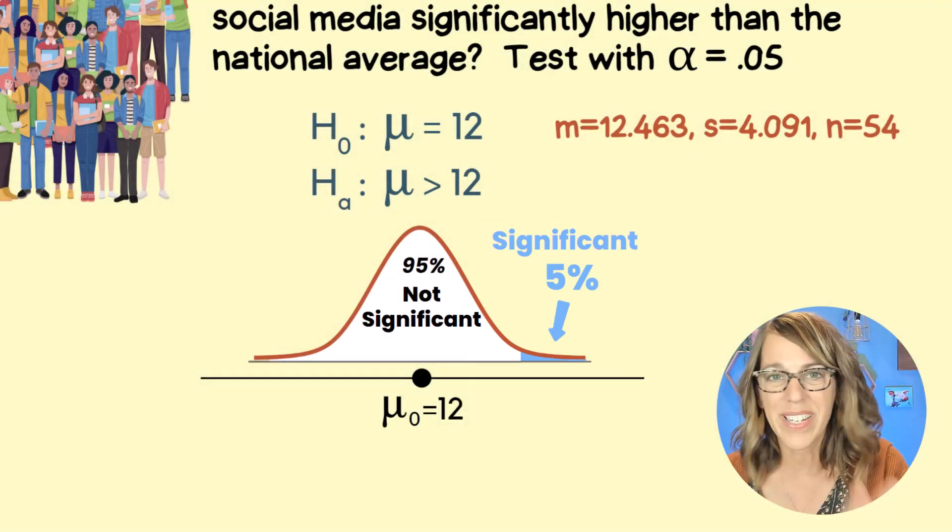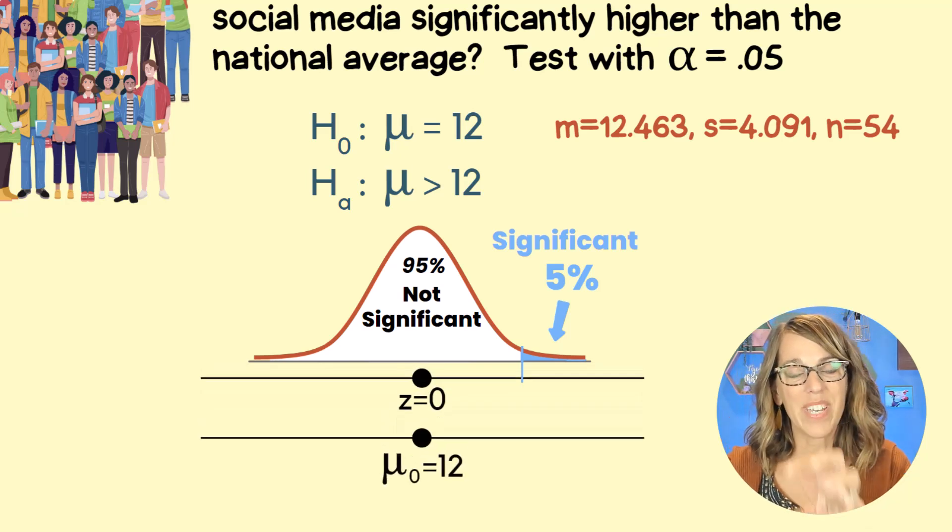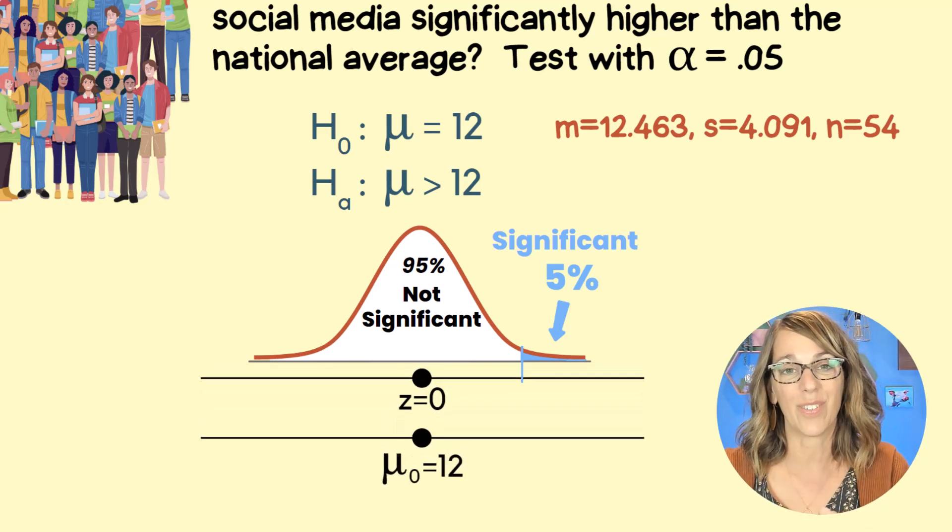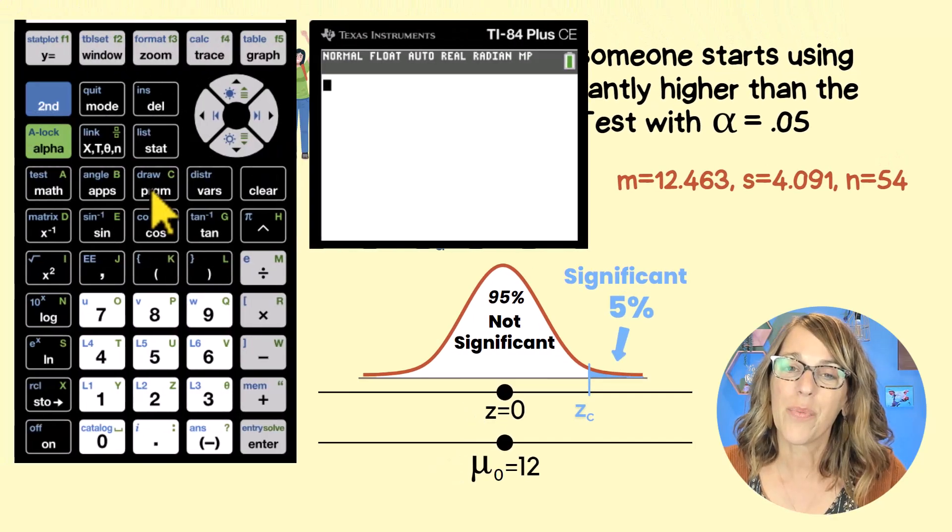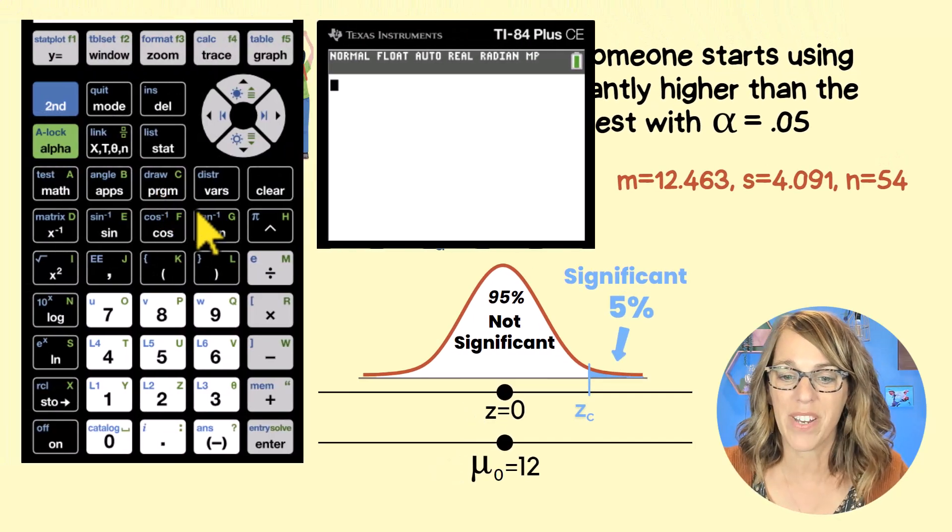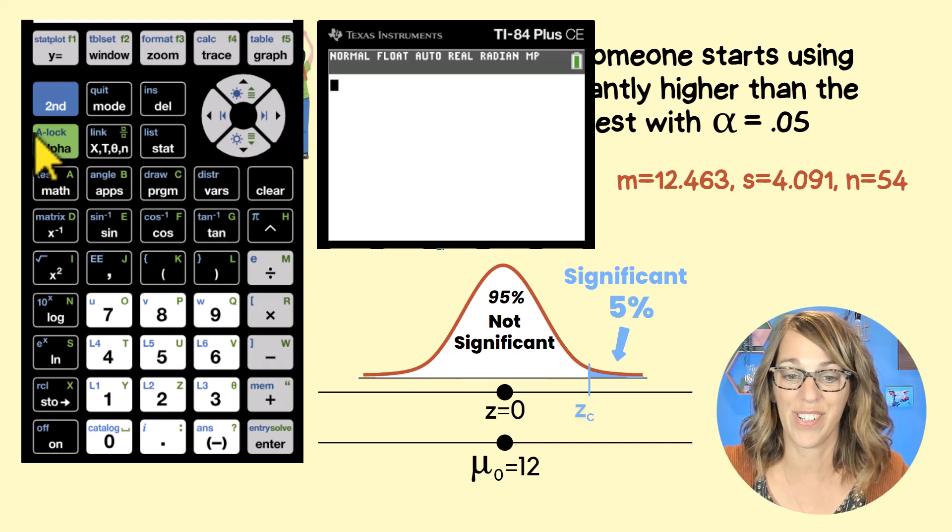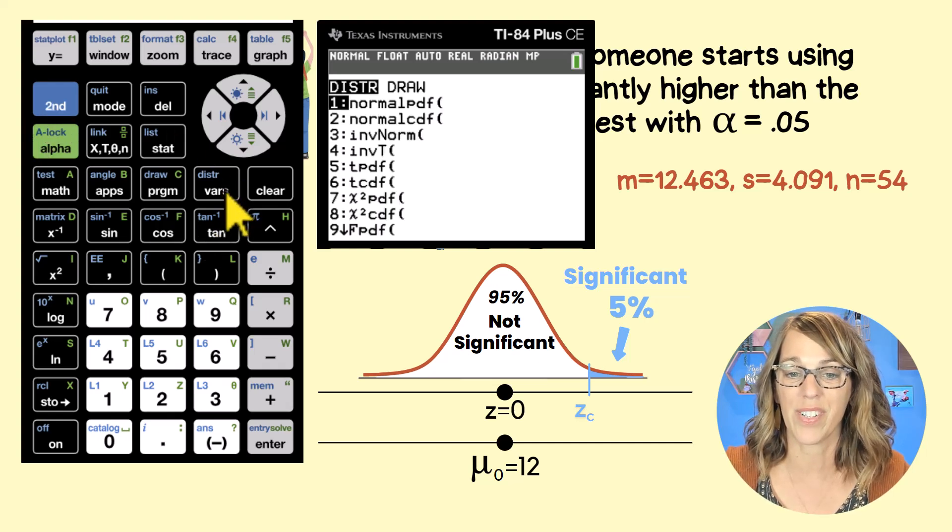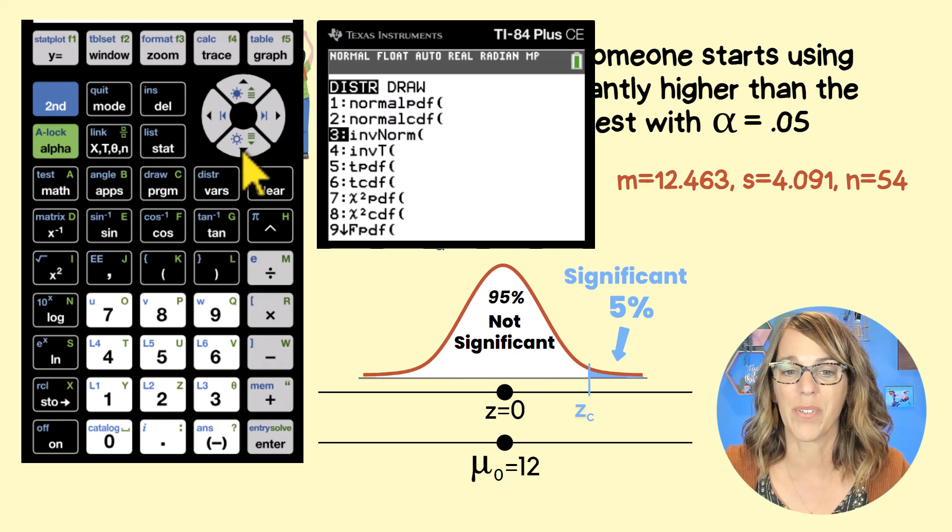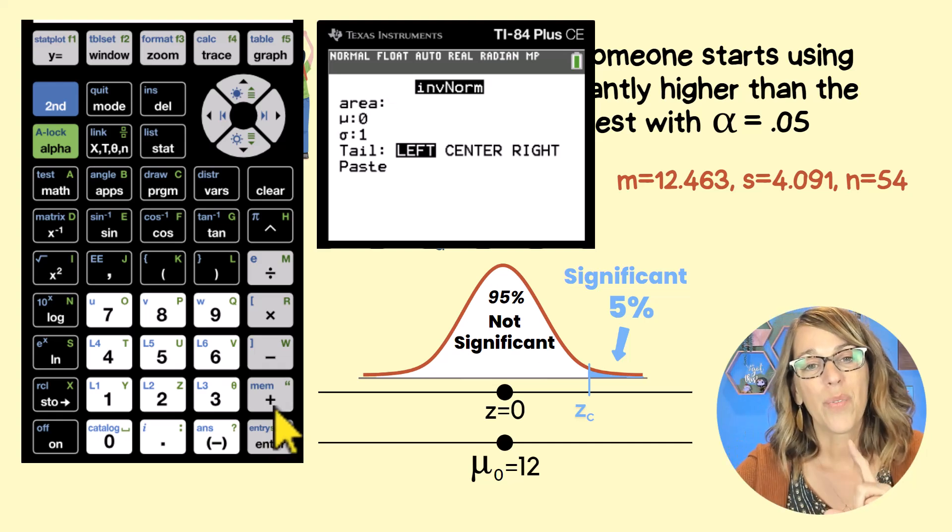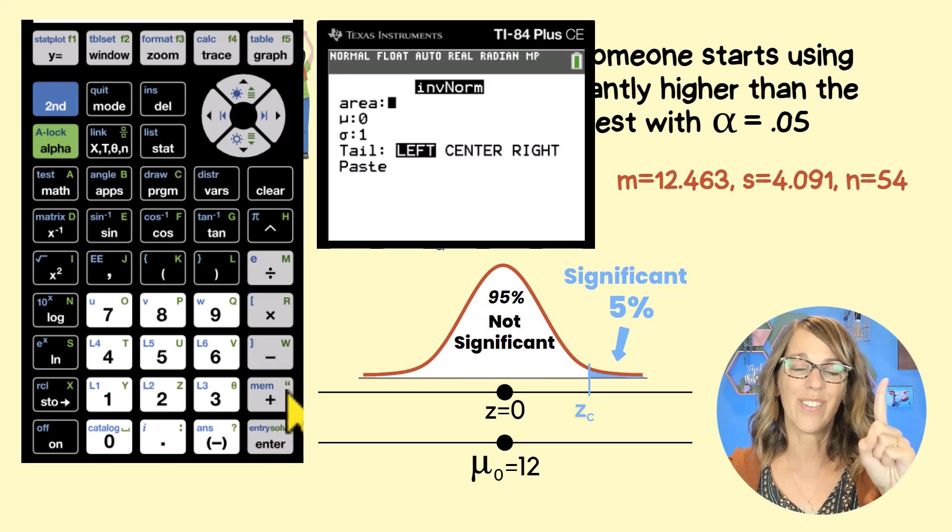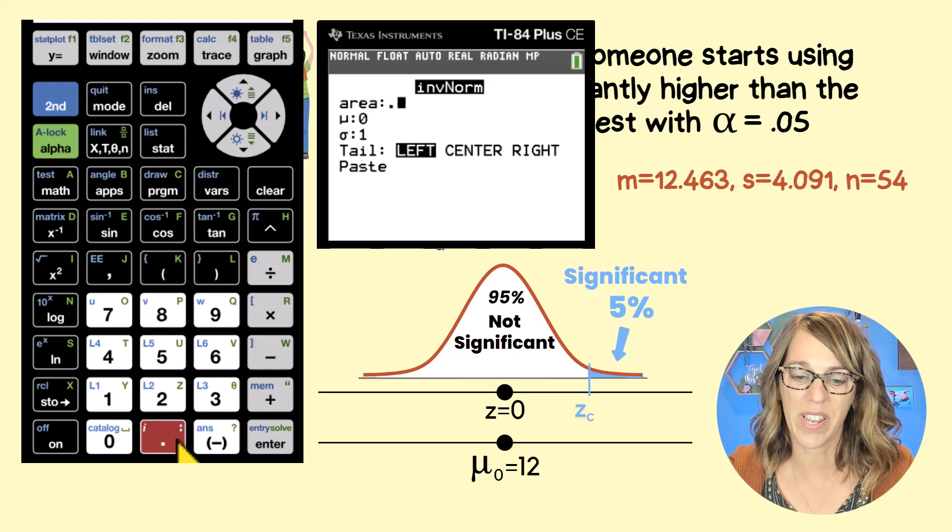But we want Z scores. So I know that the mu in the middle is a Z score of zero. What I really want is that critical Z score that cuts off that upper 5%. In the calculator, we want to go to that distribution menu and the distribution menu is second of VARS. So I'm going to go second followed by VARS. I'm looking for the inverse norm. So I arrow down to number three and then I hit enter and it asks me for the area. Well, I want the area in that single tail that was my upper 5% or 0.05. And then enter.